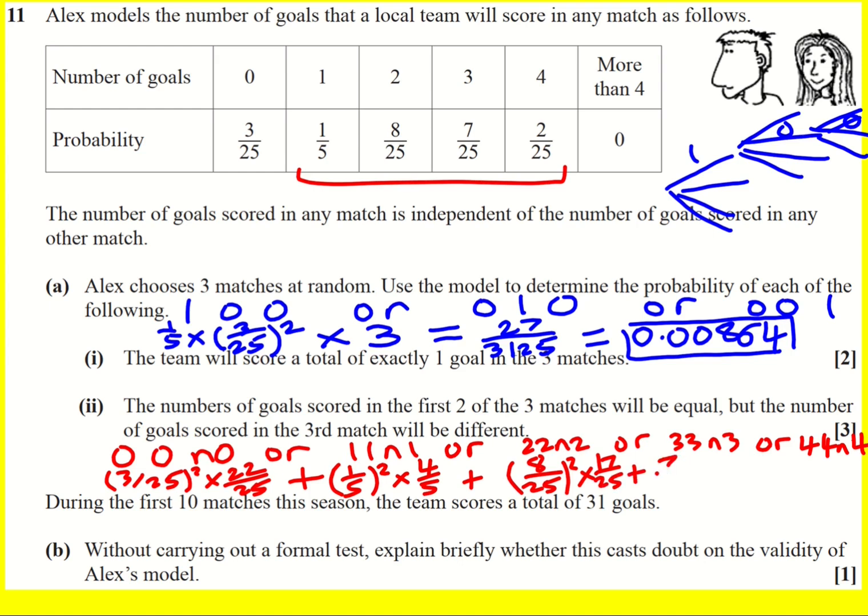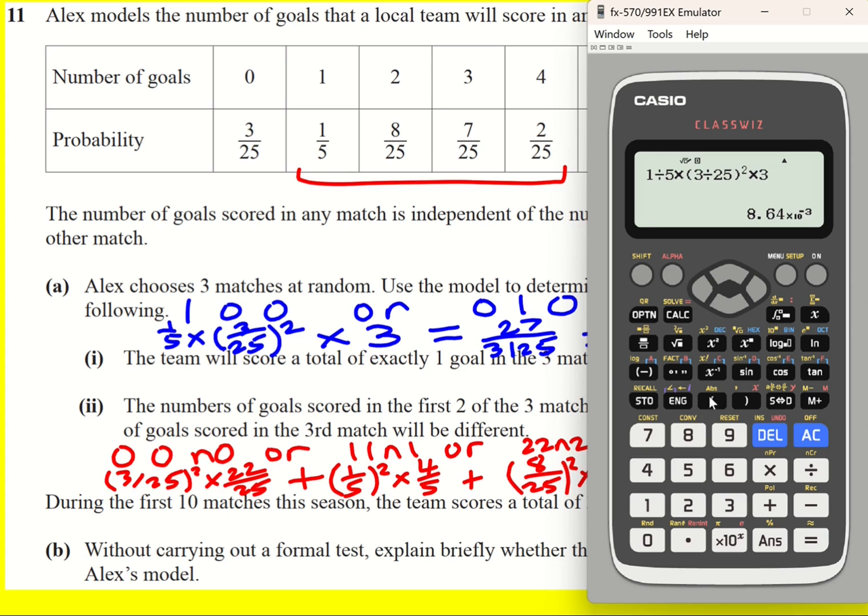Next one is 1 fifth squared times 4 fifths. Okay, struggling a little bit to fit this all in. He's only gone and done it. Just about fitted that in. I'm not going to write down each term expanded. I'm just going to put the whole thing in my calculator. Hope for the best that I put it in correctly.